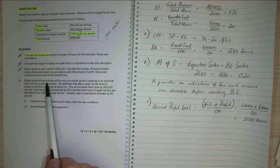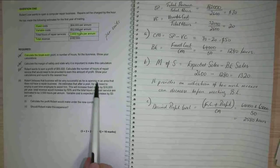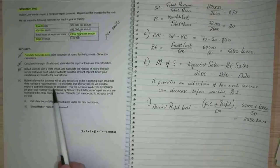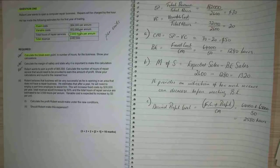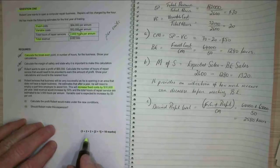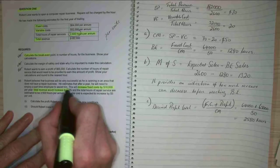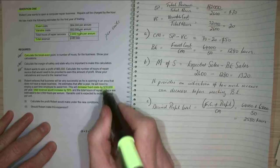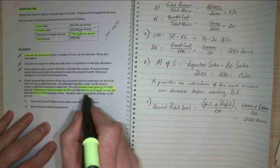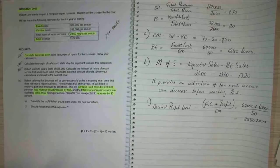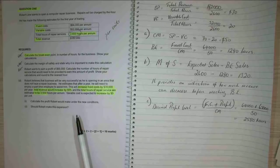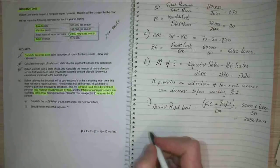Now Robert believes that the business will be very successful. He is opening in a new area that does not have a repair business. He estimates that after a year he will need to employ a part-time assistant. This will increase fixed cost by $30,000 per year. And total revenue will increase by 50%. And the total hours of service are expected to be 3,500. And variable cost is expected to increase by $3 per hour. Calculate the profit Robert would make under these new conditions. So let's go D1.